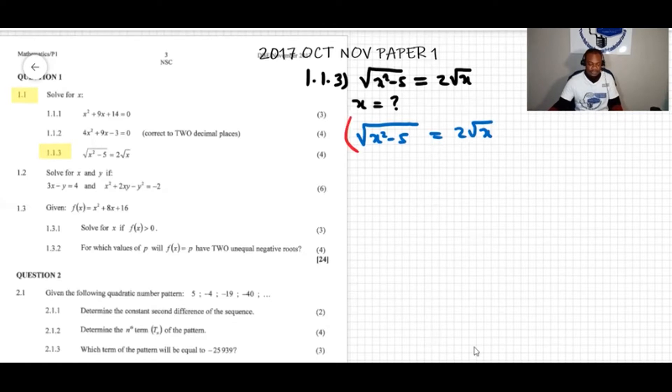Why? Because I want to get rid of the radical sign, and the power of 2 cancels the radical. Over here we can just cross the radical sign with the 2, and then we're left with x squared minus 5. And then this is like 2 squared and then root x to the power of 2.